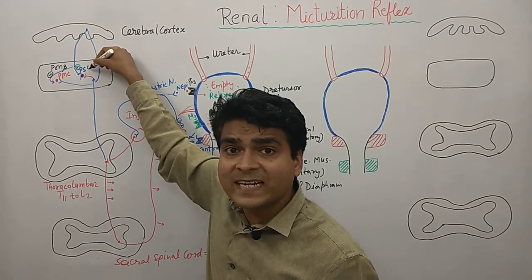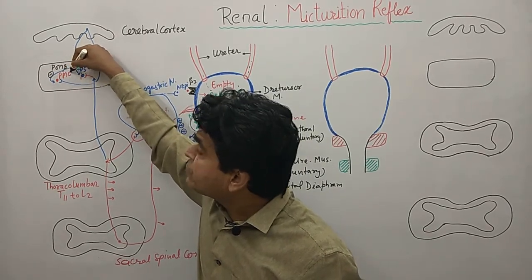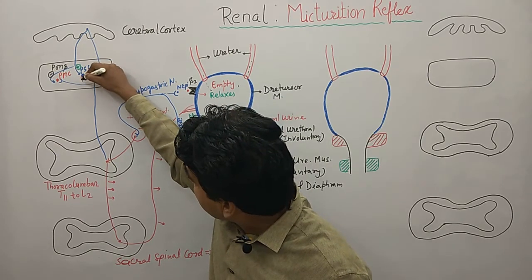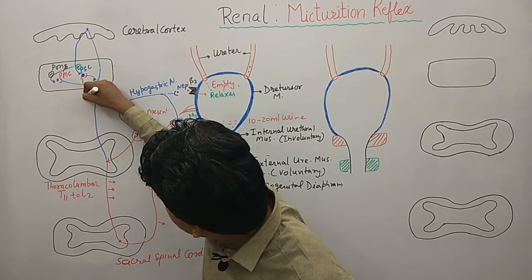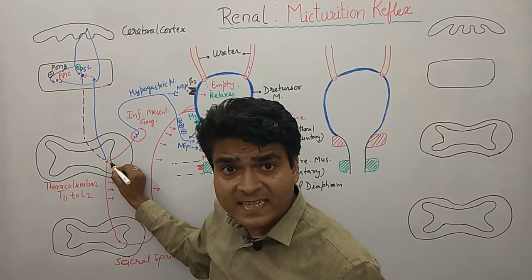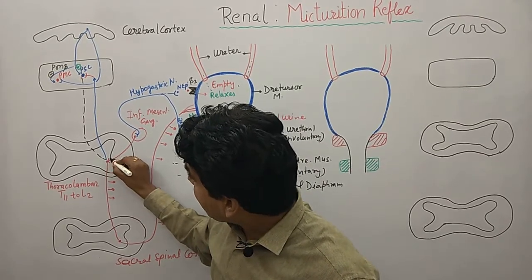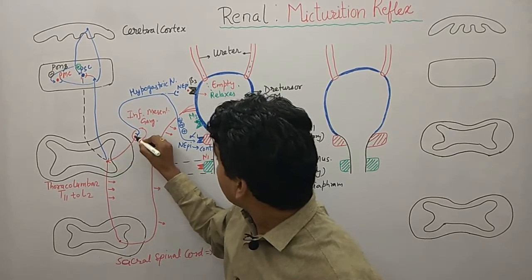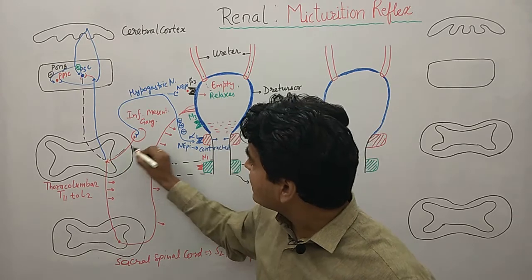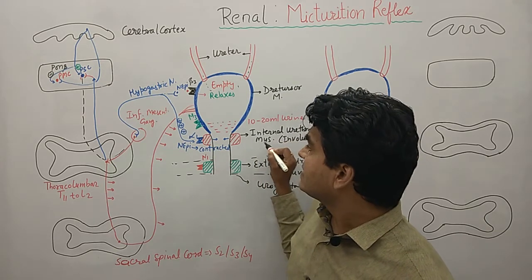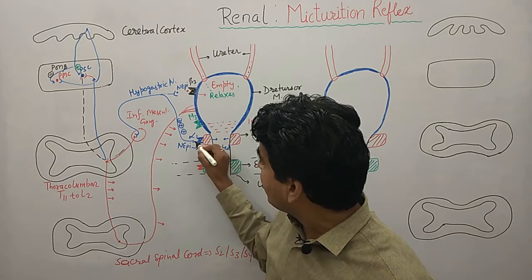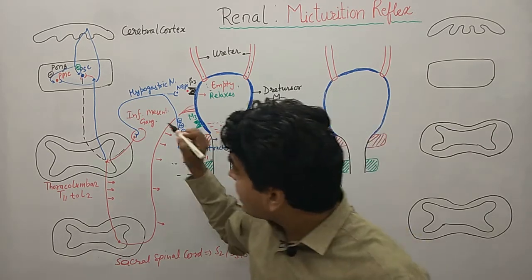Since the pontine storage center is activated and the pontine micturition center is inhibited, there is down-regulation of impulses. These reach the thoracolumbar area and activate the sympathetic system again, giving the same message to beta-3 receptors to cause relaxation, as well as sending the same message to alpha-1 receptors on internal urethral muscles to cause contraction.